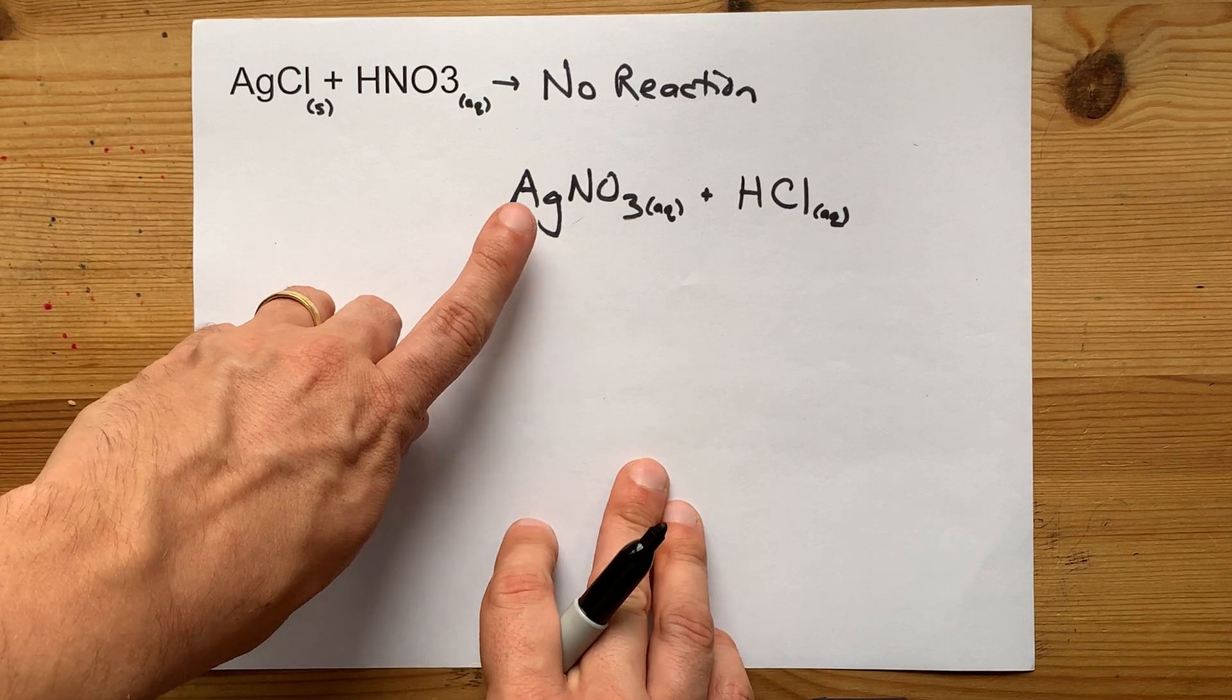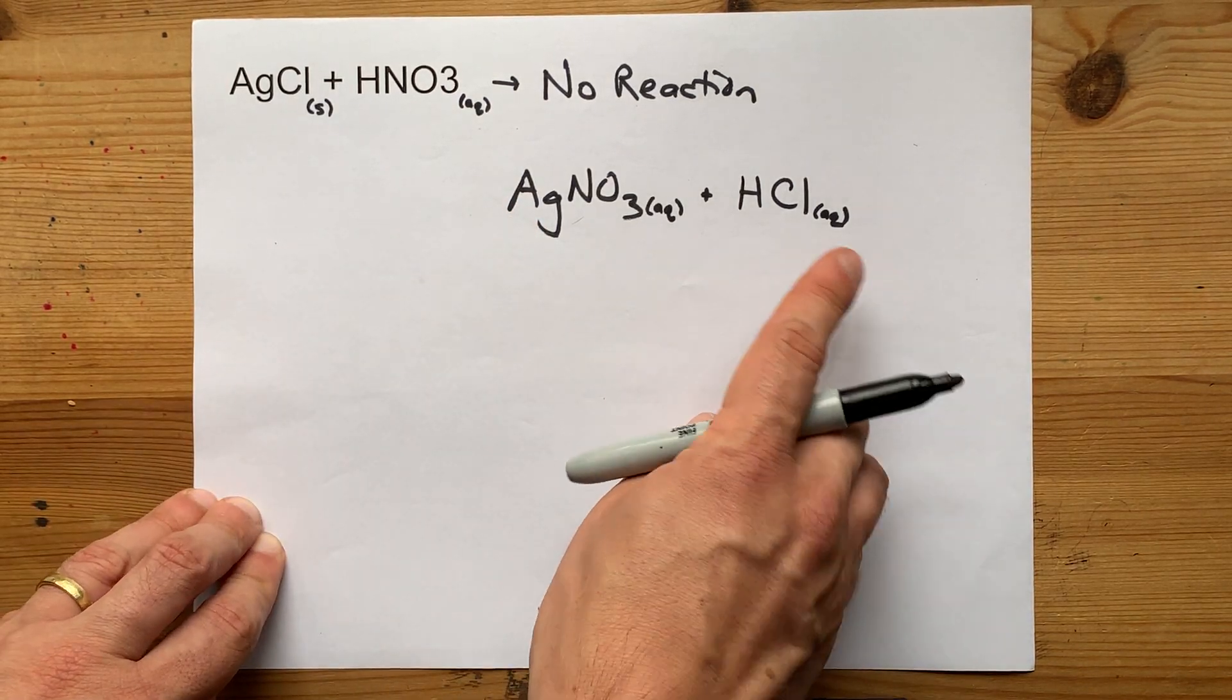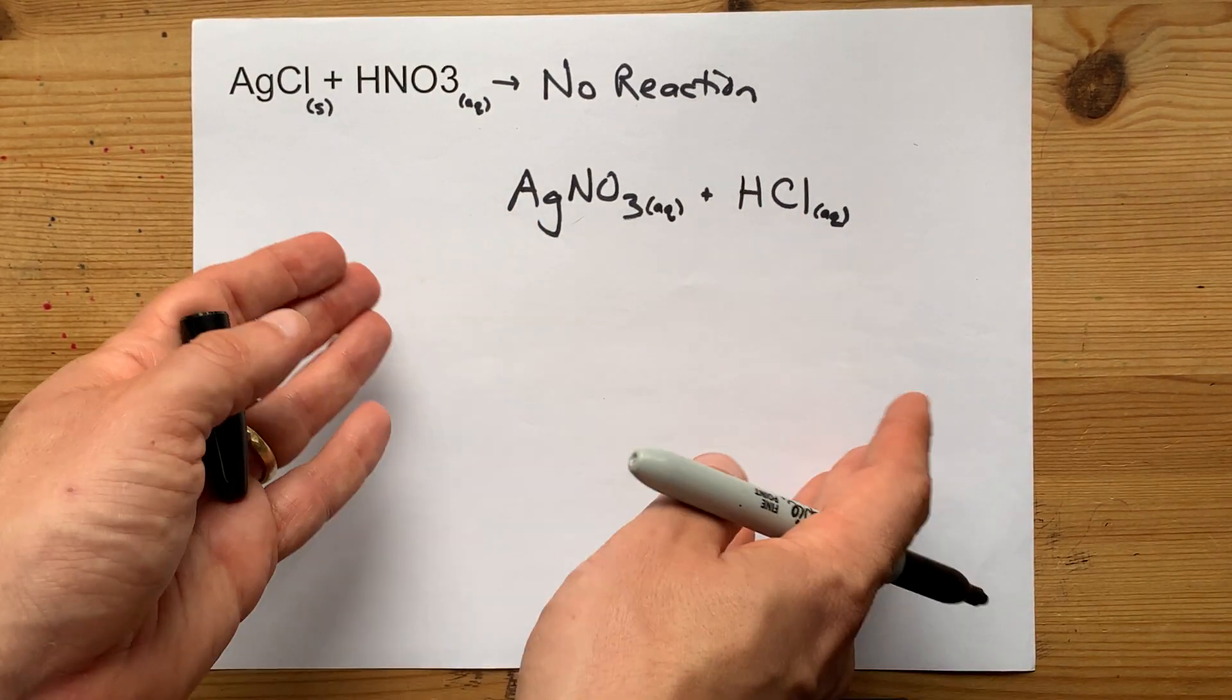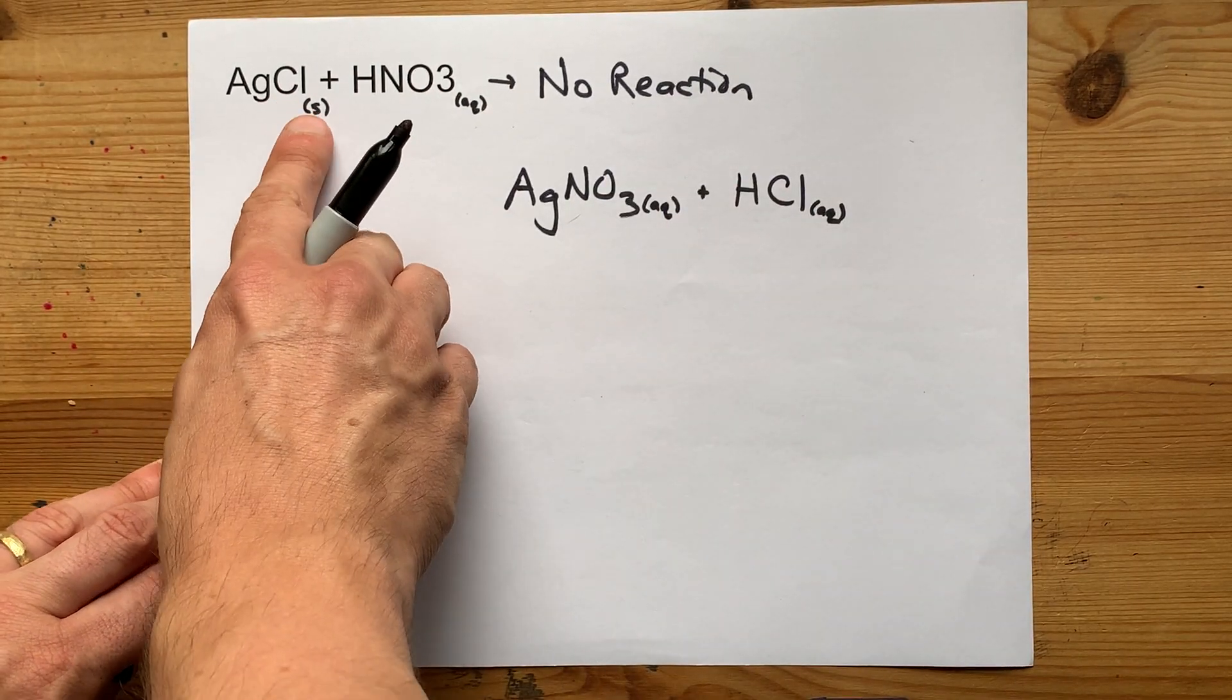You're never going to get silver chloride reacting with nitric acid to give you these back. You can't have the aqueous silver ions and aqueous chloride ions together. That's what insolubility means.